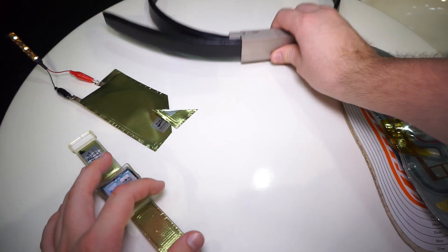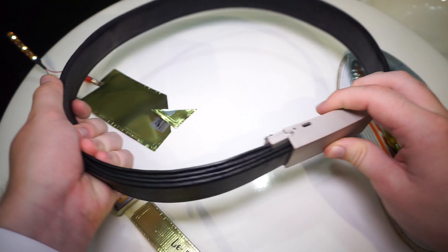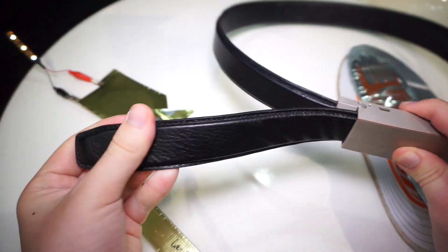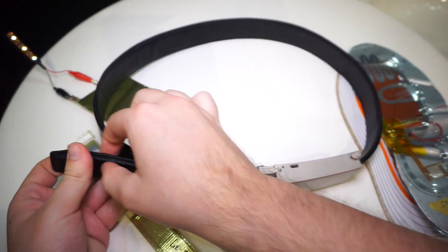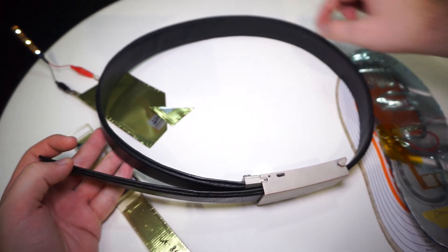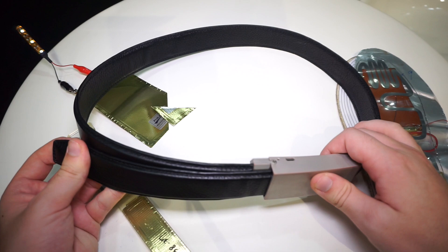They are also showing a smart belt. As you can see here, this is a power storage belt made of nice leather with a nice design. Inside this belt are built-in flexible batteries everywhere.